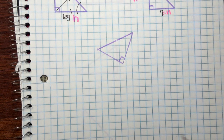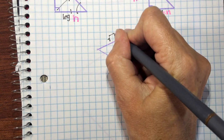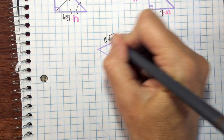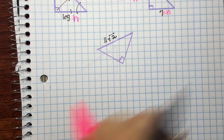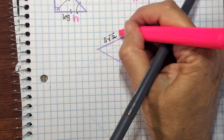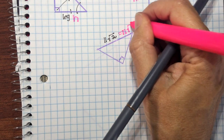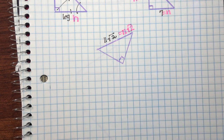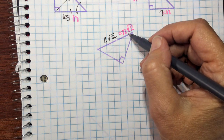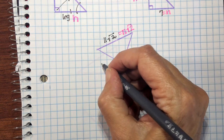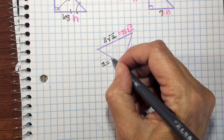Here's another example. If I know that my hypotenuse is 11 square root 2, then I know that equals n square root 2. So I divide both sides by square root 2, and I get n equals 11.